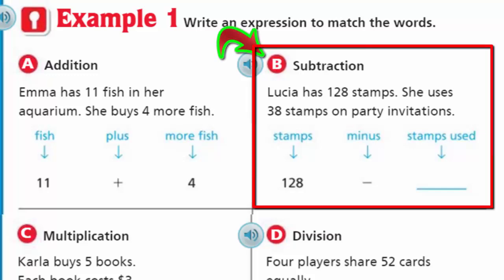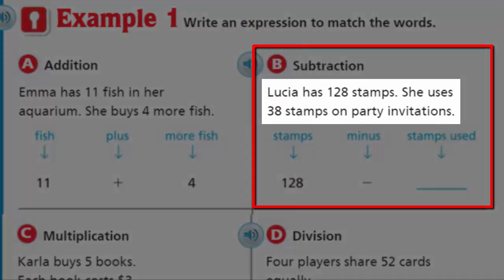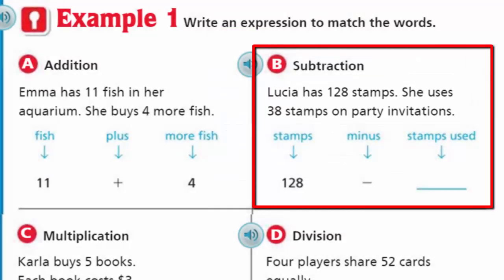Now on B, it says subtraction. Lucia has 128 stamps. She uses 38 stamps on party invitations. So she used some of those stamps. Therefore, they're no longer going to be part of that group of 128. So we're going to subtract. The expression is 128 - 38. Again, we're not looking for an answer. We're not asked to evaluate. We're just simply asked to write an expression to match these words.